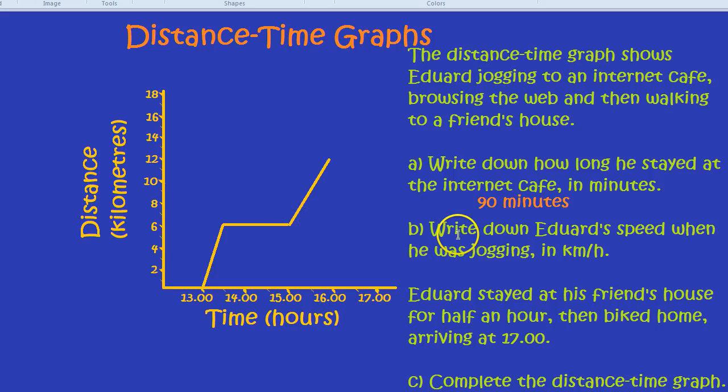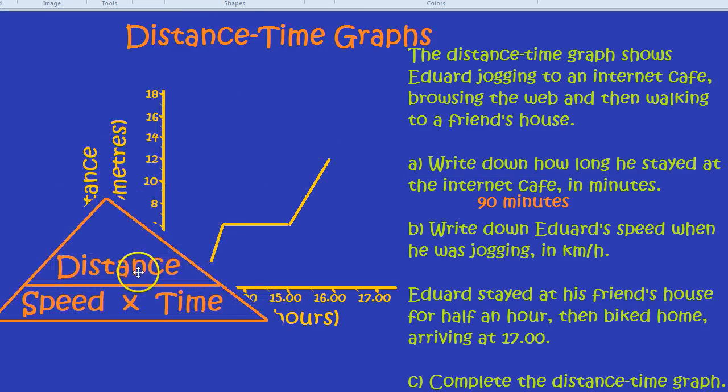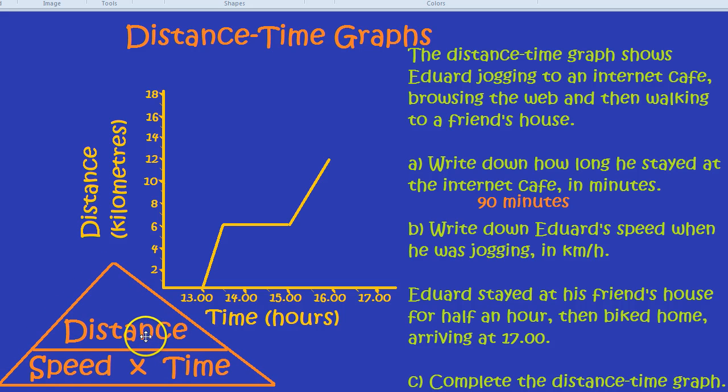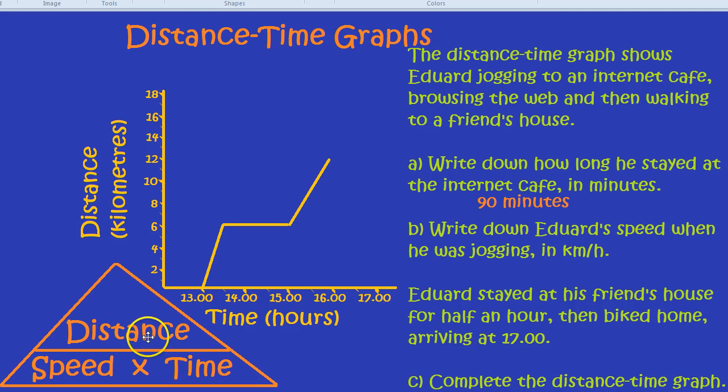What about the next question? Write down Eduard's speed when he was jogging in kilometers per hour. To work out speed, we need our incredible triangle. Now, this triangle, you need to absolutely know off by heart. And it's called the distance-time-speed triangle. There it is. Let's put it in the bottom left. Distance, speed, and time triangle.